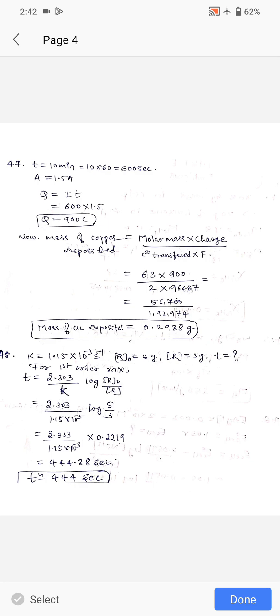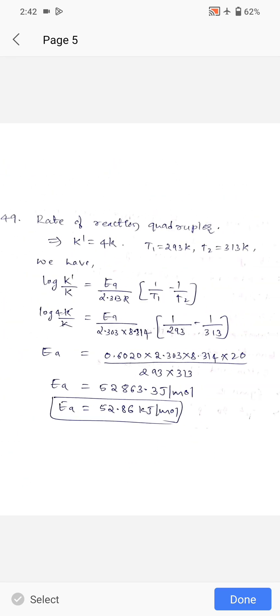Question 48: k value is given, initial concentration is given, final concentration of reactant is given. They asked to find out time. For first order reaction, t equals 2.303 divided by k into log R0 by R. Putting the values, k equals 1.15 times 10 to the minus 3, log of 5 by 3 equals 0.2219. Substitute all values and multiply, you will get 443.38 seconds, approximately 444 seconds.